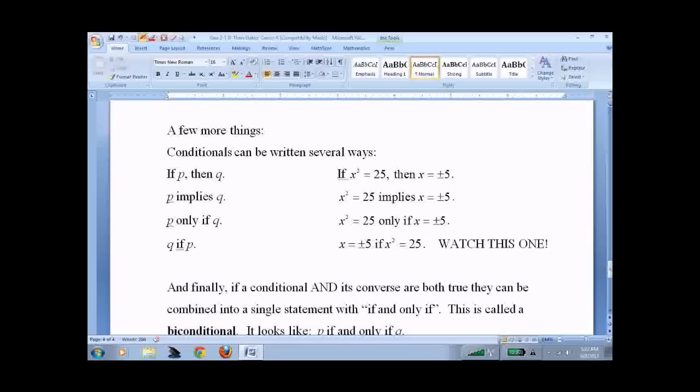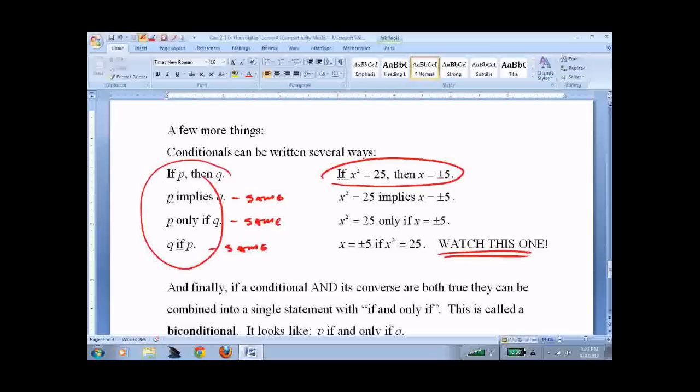These are other ways to write it. This is my original statement: if x squared equals 25, then x equals plus or minus five. These are all the same statement, just different ways to write it. This is the one to watch on the bottom: q if p. X equals plus or minus five if x squared equals 25. That confuses me. The first thing I would do is rewrite it. What they're saying is if x squared equals 25, then x equals plus or minus five. Very ticky-tacky. I try not to use it too often, but it does pop up.